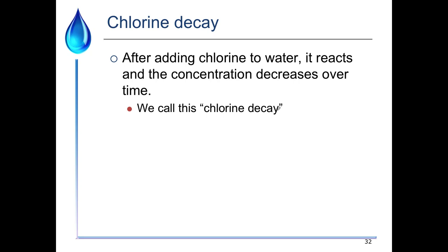Chlorine also decays over longer time scales — what we call chlorine decay. After the initial fast reactions, concentration decreases over time due to reactions with pipe walls, long-term reactions with organic matter in solution, and possibly temperature effects. Chlorine is a reactive substance and will react away over time.